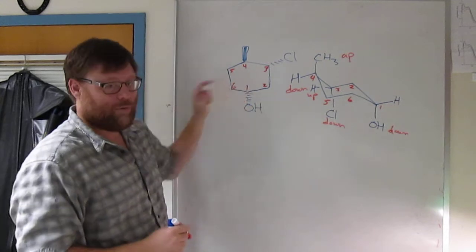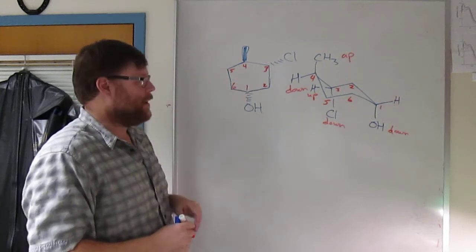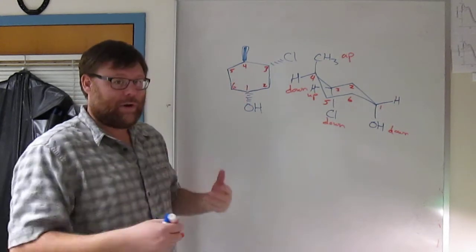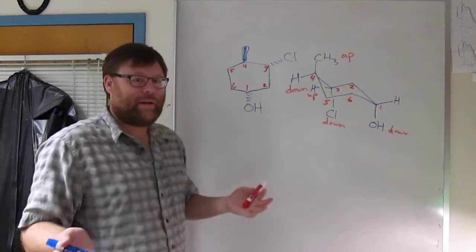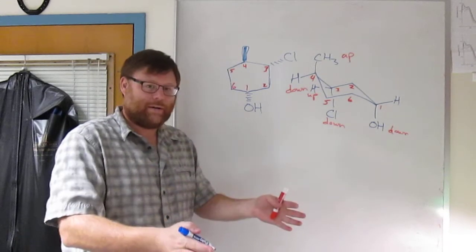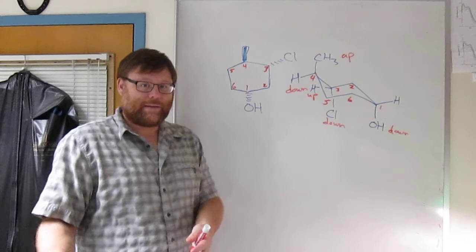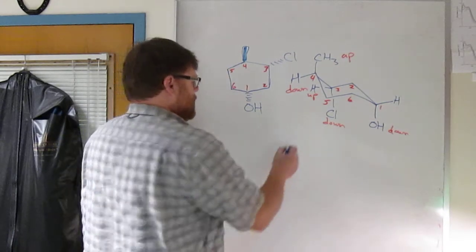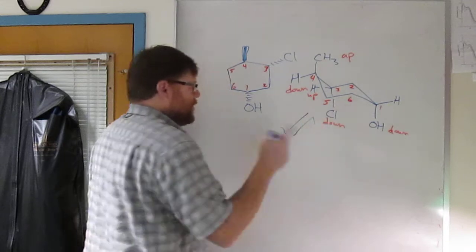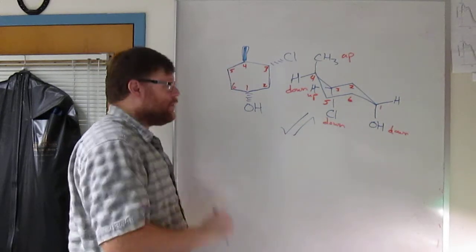This is one of the two chair forms of the original molecule. To get the second one, you want to do a chair flip. That's always the way you're going to answer this question. Get one chair, and then if you need the second chair, just do a chair flip. The two chairs go back and forth. They interconvert between one another.